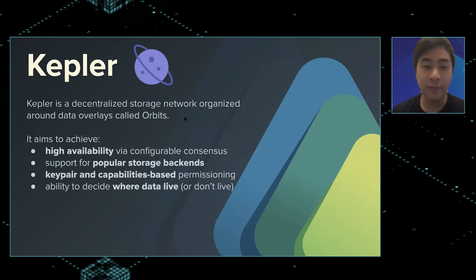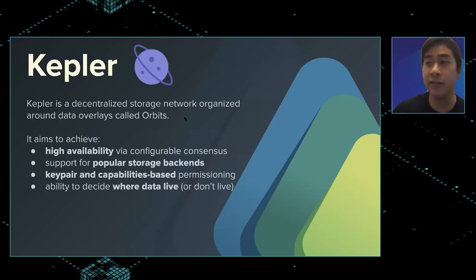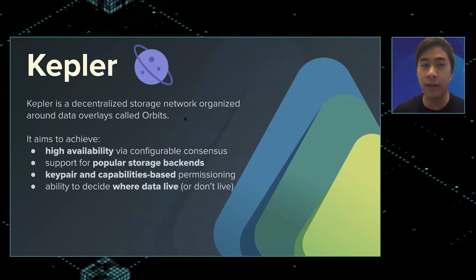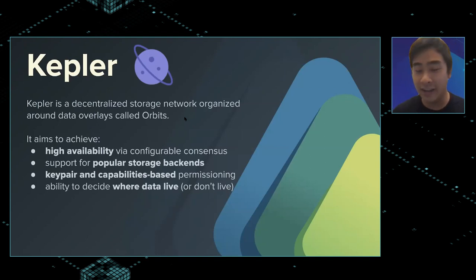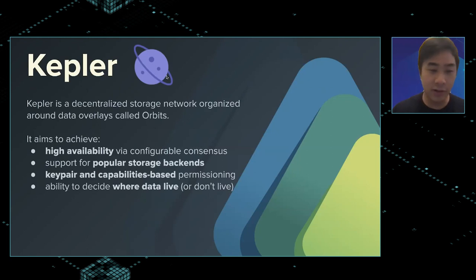We need some kind of permissioning — ideally key-based and capability-based — and the ability to talk about where you actually want the data to live. What if you have IPFS nodes everywhere? How do we constrain it to a single country or a single building, maybe your basement? How do we make sure your IoT data can stay in your house and not get eaten up by a cloud provider? What is the way we can build on top of IPFS to enable this kind of functionality?